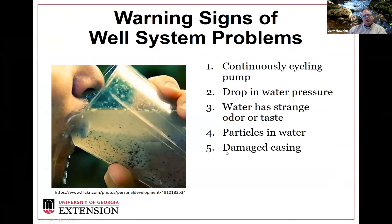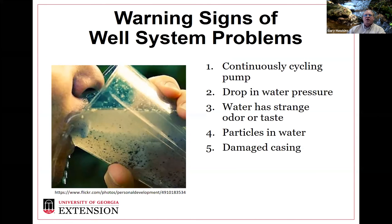When looking at well water issues, some problems we can encounter with well systems include a pump that continually cycles, dropping water pressure, strange odors or taste in the water, particles in the water, and a damaged casing. Understanding what these symptoms indicate is part of troubleshooting well water problems.